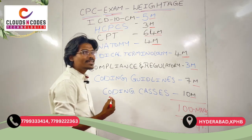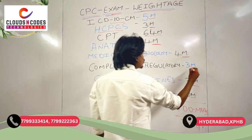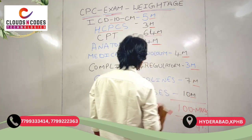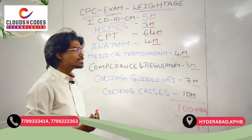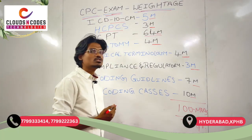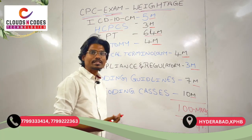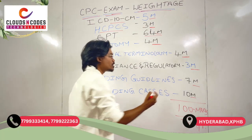From Compliance and Regulatory Billing questions, you will get 3 marks. From Coding Guidelines — the guidelines of ICD, CPT, and HCPCS — you will get 7 marks.